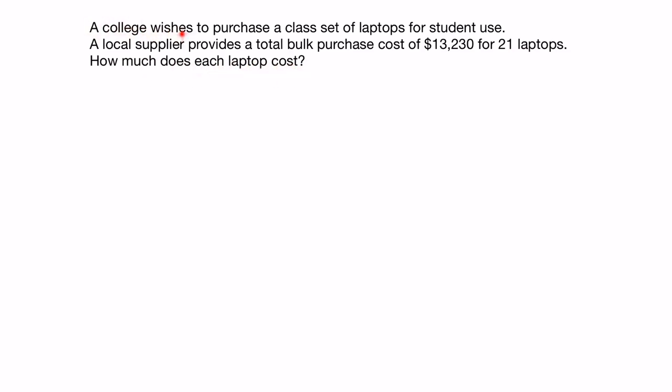The first sentence gives us some background and context. The second sentence gives us some key information and numbers. The third sentence tells us what we need to find out. Let's pull out the key information. We know the total cost is $13,230 and there are 21 laptops. We want to know the cost per laptop.